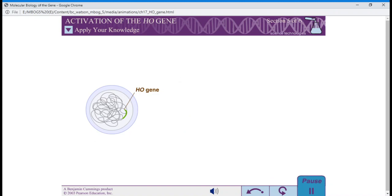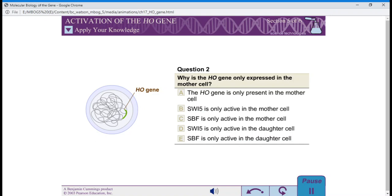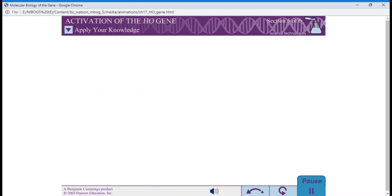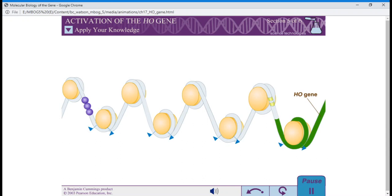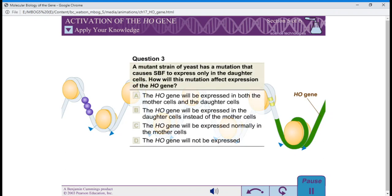Question 3. A mutant strain of yeast has a mutation that causes SBF to express only in the daughter cells. How will this mutation affect expression of the HO gene?